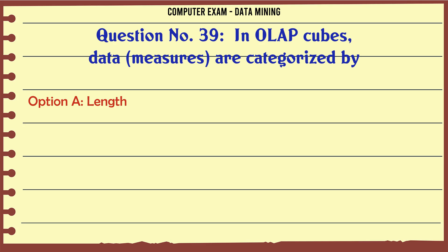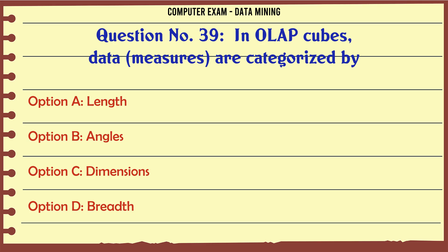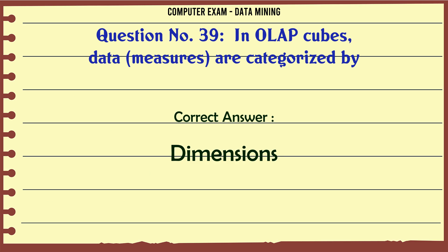In OLAP cubes, data measures are categorized by: A. Length. B. Angles. C. Dimensions. D. Breadth. The correct answer is Dimensions.